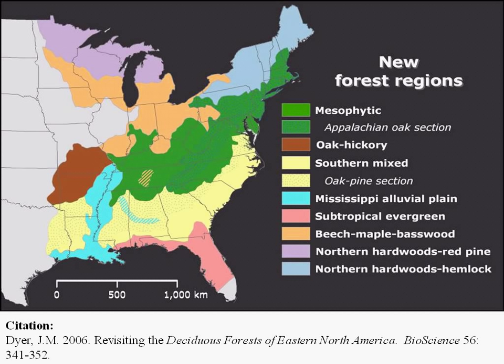Mesophytic means adapted to moist conditions, and with the rainfall that we get in the western part of the state and in the Appalachians, that's where that terminology comes from. The forest communities in this region often support more than 30 different canopy tree species at a single site, and have a very rich understory of ferns, different types of fungi, perennial and annual herbaceous plants. The freshwater communities in this region are some of the richest temperate freshwater ecosystems in the world.